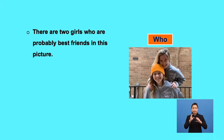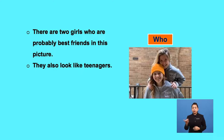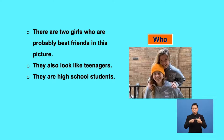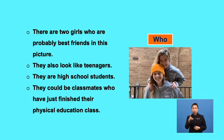Let's look at the examples prepared for you. In this picture, find out the details that answer the question WHO. Firstly, you can say: 'There are two girls who are probably best friends in this picture. They also look like teenagers.' Then you could also mention that there are high school students, and you make this conclusion based on their size.